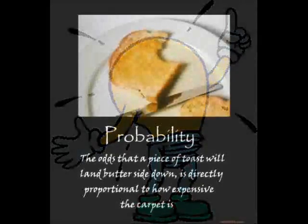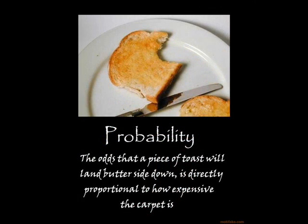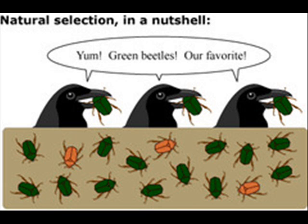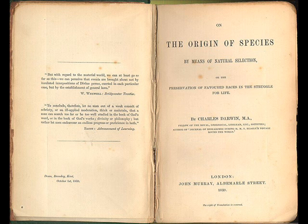From these important observations, Darwin inferred that individuals whose inherited traits give them a higher probability of surviving and reproducing in a given environment tend to leave more offspring than other individuals, and that this unequal ability of individuals to survive and reproduce will lead to the accumulation of favorable traits in the population over generations. This is the basis of natural selection, explained in Darwin's book, The Origin of Species.